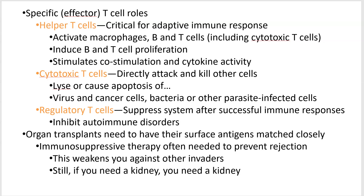Here we are at the last screencast, number six for the immune system lecture. It's been a long trip, hasn't it? So let's look at the specific jobs of T-cells. There are three that I want you to learn — these are the three big ones, and anything else would just be subcategories. So helper T-cells. Now they're called helper, but they're absolutely critical. For example, HIV attacks helper T-cells, and if you lose all the helper T-cells, your entire immune system crashes.